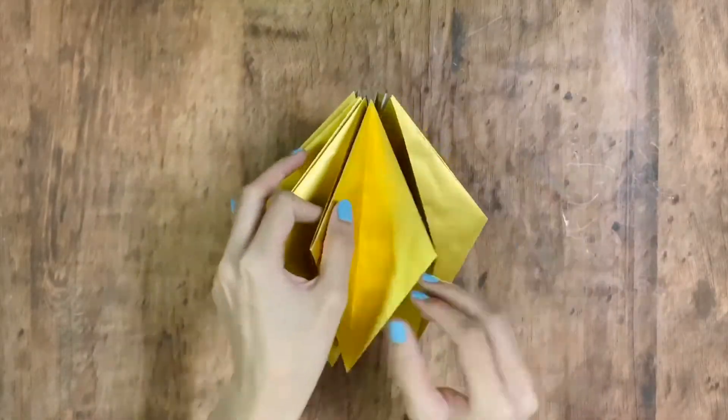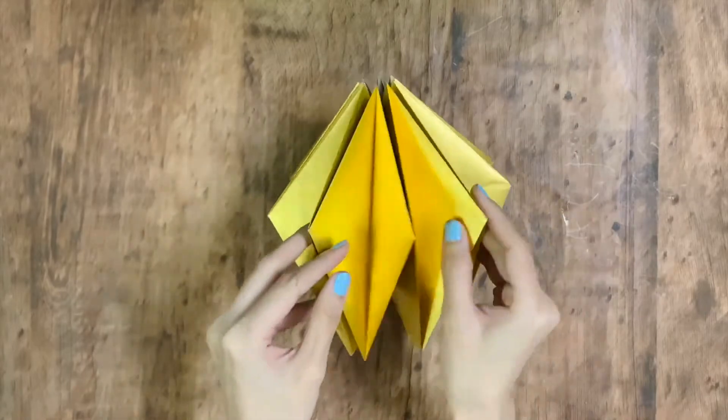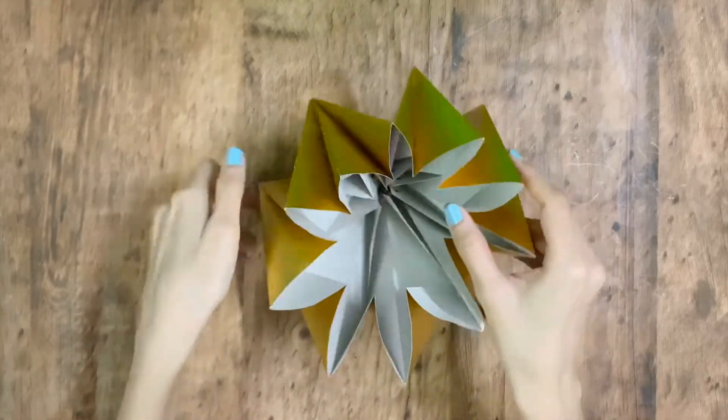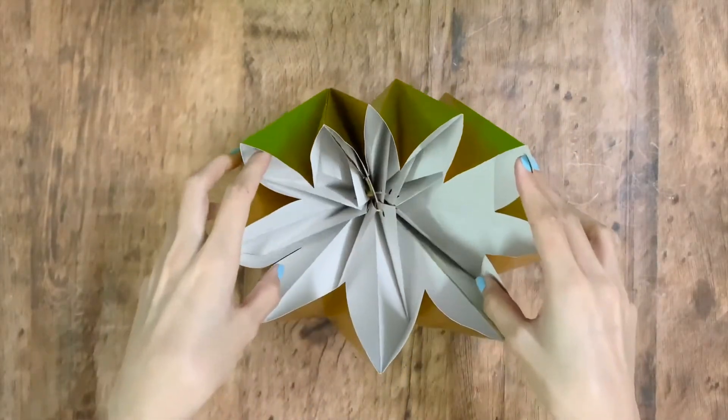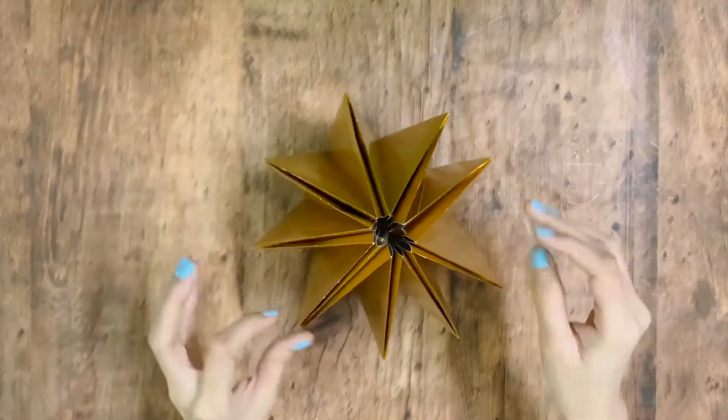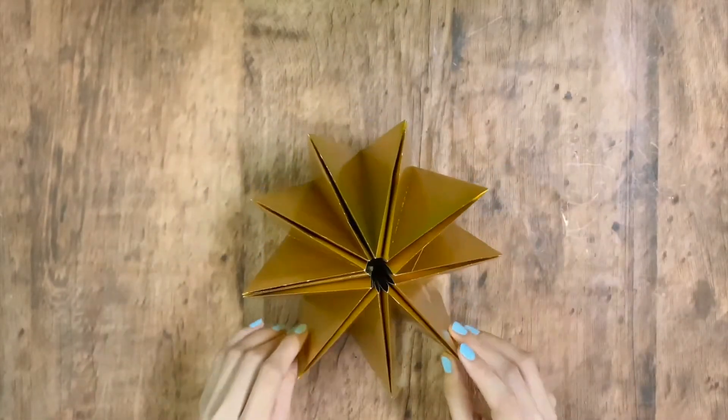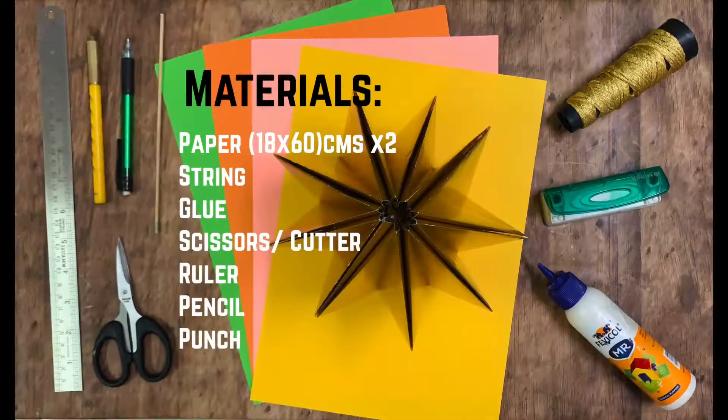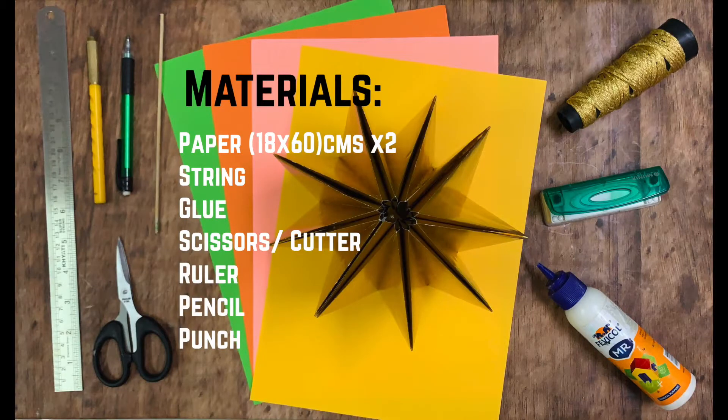Hello guys, welcome back. Today we'll be making a lamp. You can add a hanging bulb inside it or place it on an existing bulb. The materials you will be needing are here. We'll need a long strip of paper, 18 by 120 centimeters.